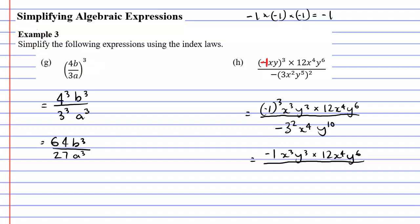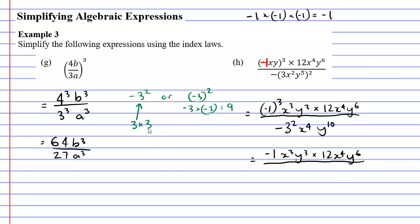For the denominator, the negative with 3 squared can throw some people. There are two situations: negative 3 squared (without brackets) versus negative 3 in brackets squared. If it's in brackets, negative 3 times negative 3 gives positive 9. Without brackets, only the 3 has been squared — you go 3 times 3 and put the negative out the front, giving negative 9. So for our denominator we want negative 9, x to the power of 4, y to the power of 10.